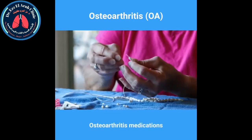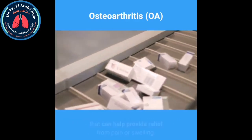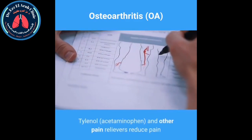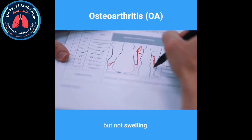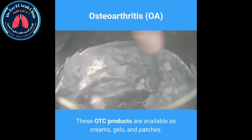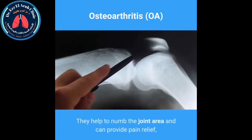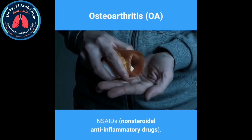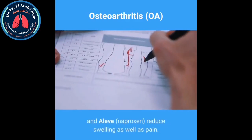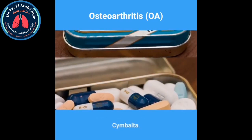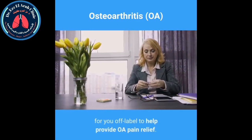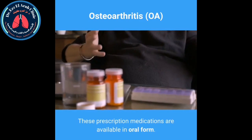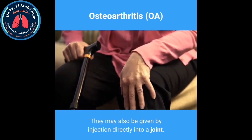Osteoarthritis medications. There are a number of different types of OA medications that can help provide relief from pain or swelling. These include oral analgesics such as Tylenol (acetaminophen), which reduce pain but not swelling; topical analgesics available as creams, gels, and patches; and NSAIDs (non-steroidal anti-inflammatory drugs) such as Advil (ibuprofen) and Aleve (naproxen), which reduce both swelling and pain. Your doctor may also prescribe the antidepressant Cymbalta (duloxetine) off-label for OA pain relief. Corticosteroids are available in oral form or by injection directly into a joint.